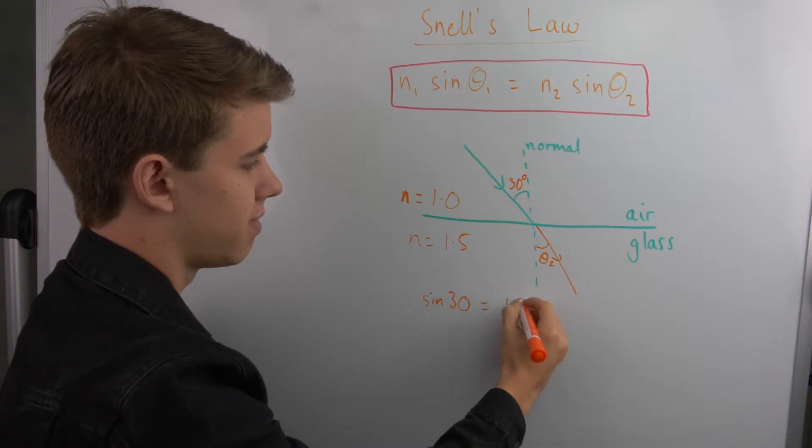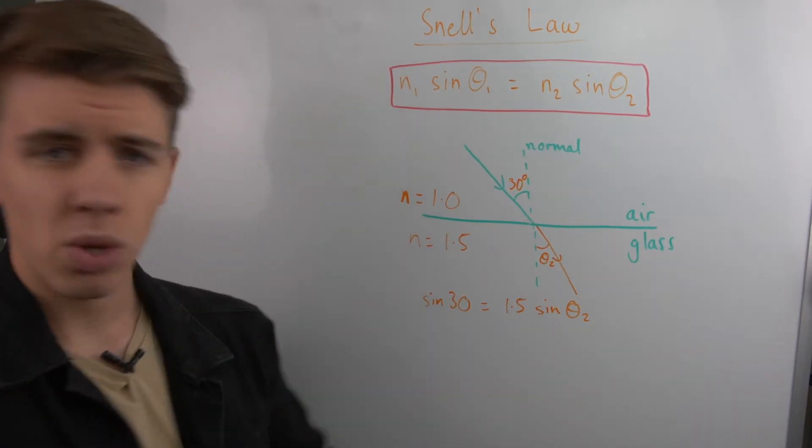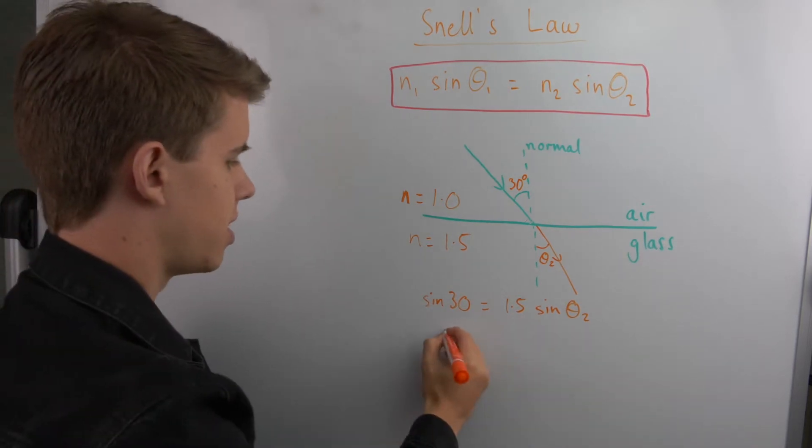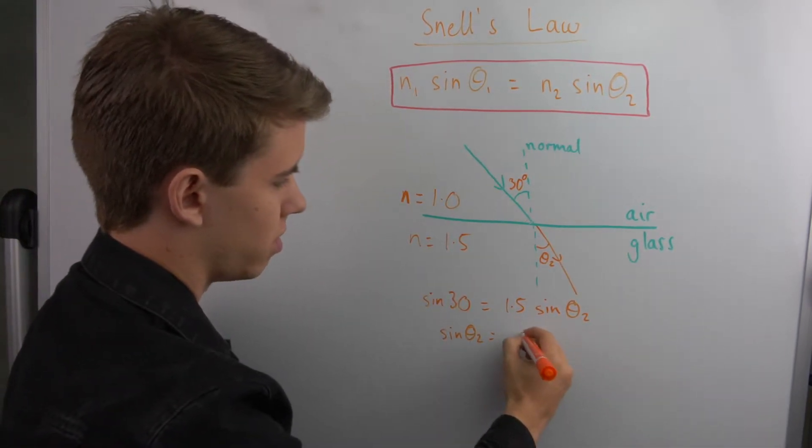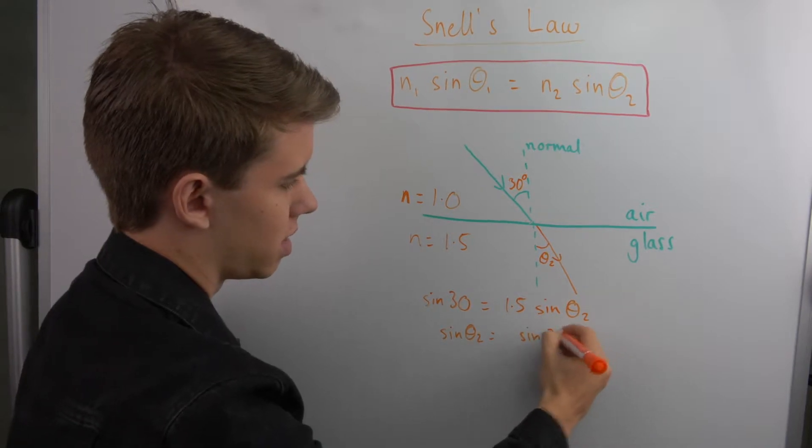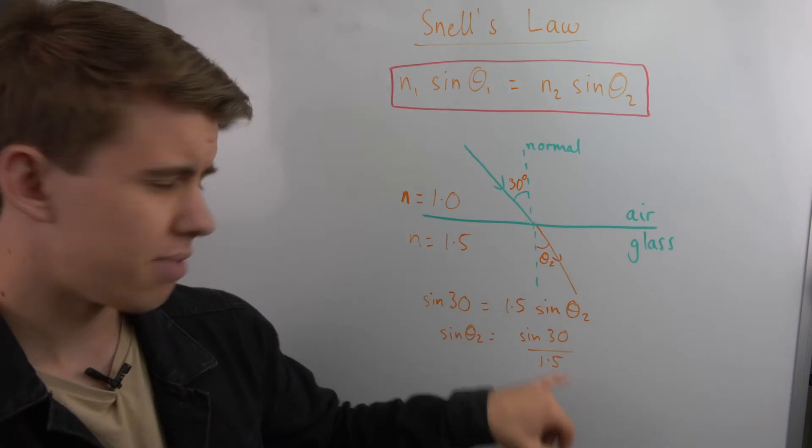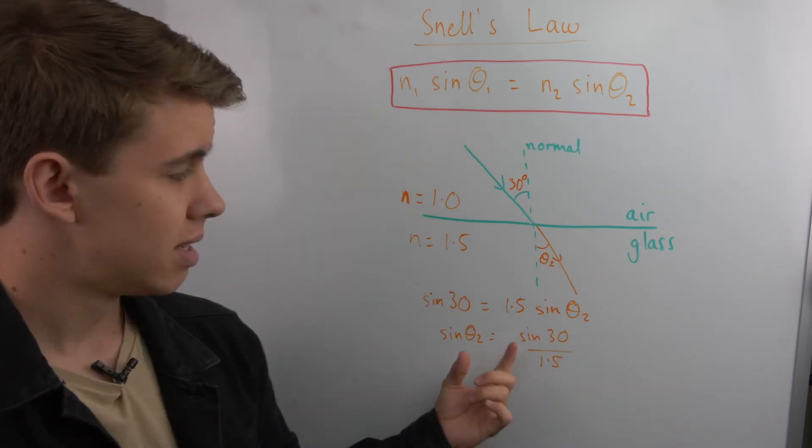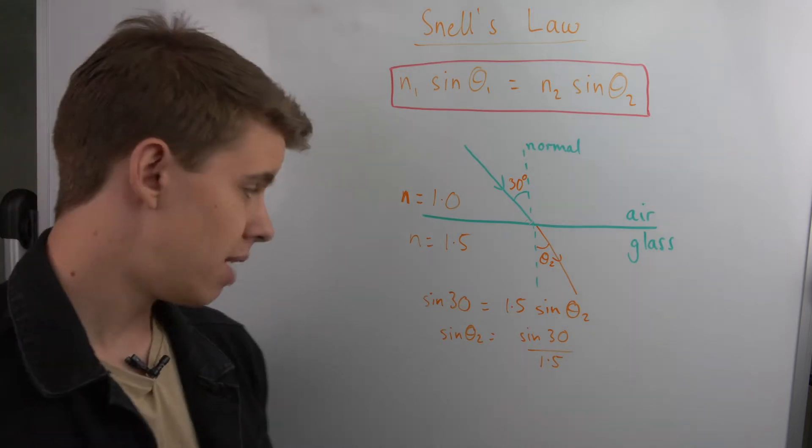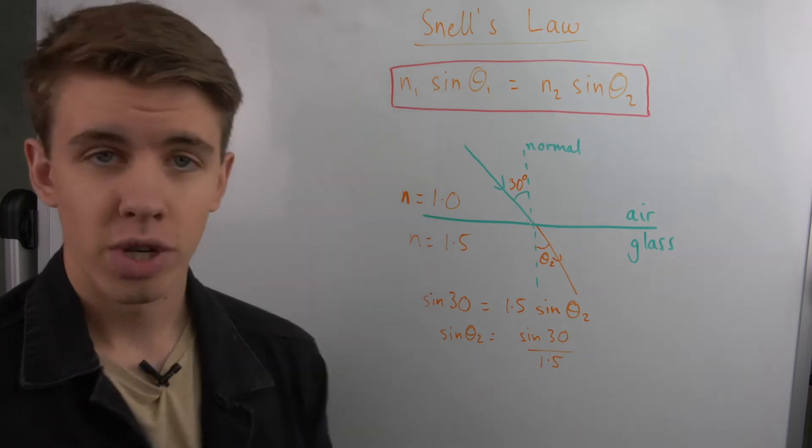Refractive index of our first medium is 1, so we can do 1 times sine of 30 is equal to 1.5 times sine of theta 2. We then rearrange that so we get sine of theta 2 is equal to sine 30 divided by 1.5. Sine of 30 if you put into a calculator you'll always get a half, so this is 0.5 divided by 1.5, so this is one third.